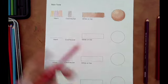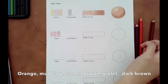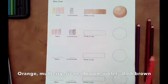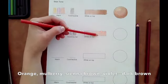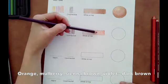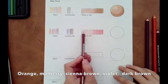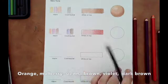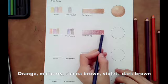We're going to continue this exact same process but with three different other skin tones. This time I'm going to use orange, mulberry, and sienna brown as my warm colors and I'm going to use violet and dark brown as my cooling slash neutral colors.